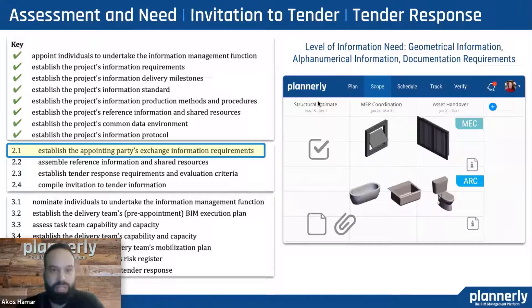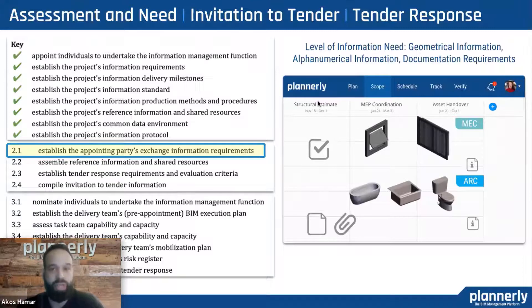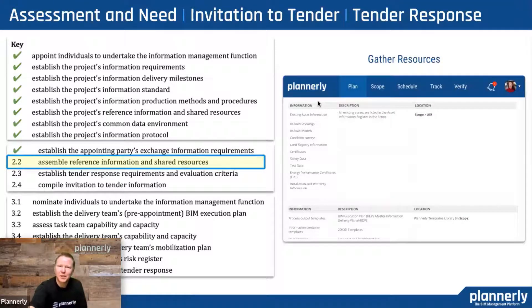The first step in the invitation to tender phase is to establish the appointing party's exchange information requirements. After the assessment and need phase, we understand the generic needs and purposes of what information is needed. Now we can go into project-specific details — what assets are we going to manage, create, and build on this project? How should we create that information, and when should we create those pieces during the project? We always follow that level of information need: geometry, alphanumeric information, documentation — making it as simple and structured as possible for teams to understand.